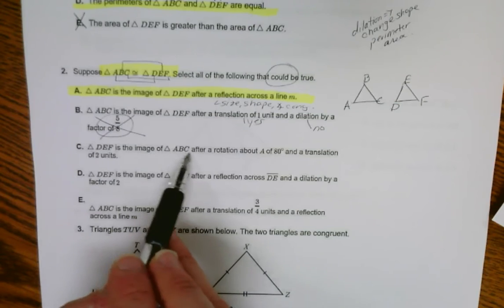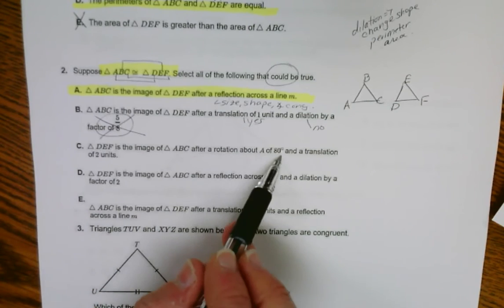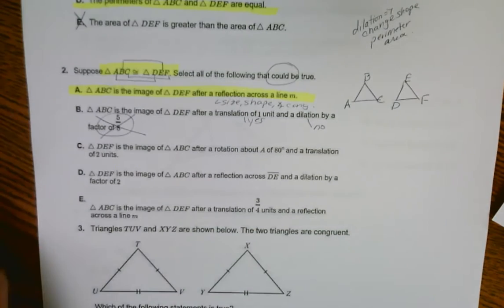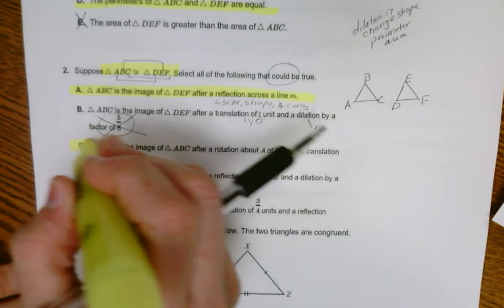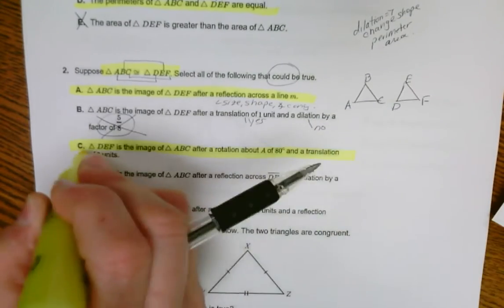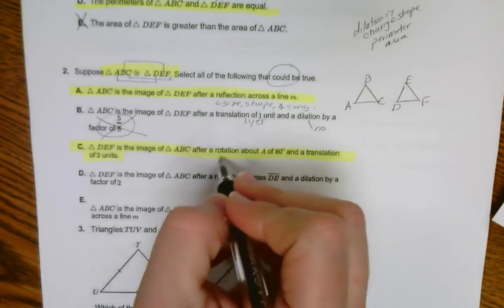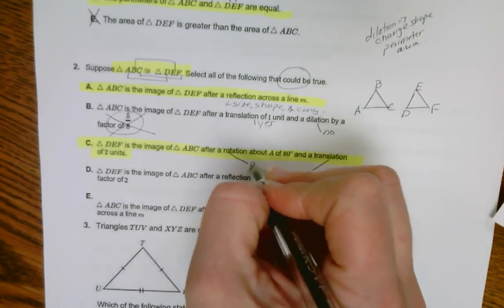DEF is the image of ABC after a rotation of 80 and a translation of 2. That could be true because rotations and translations preserve size and shape.